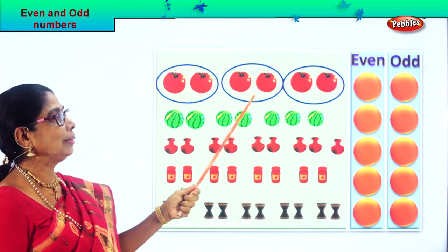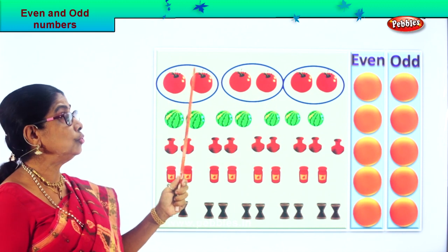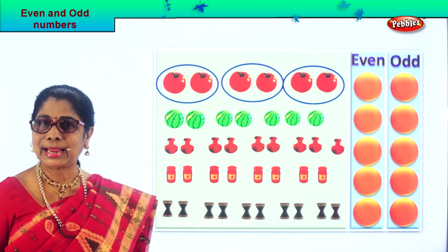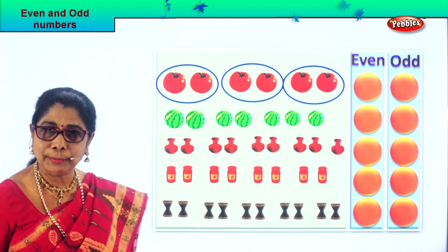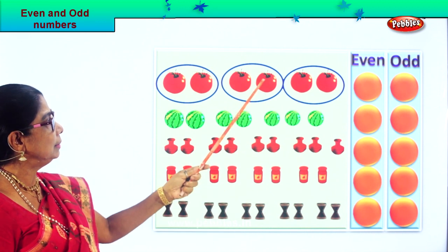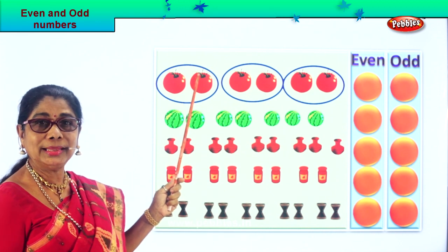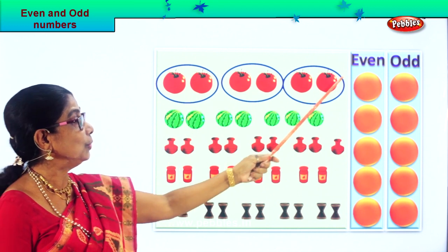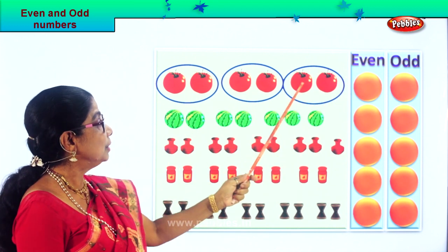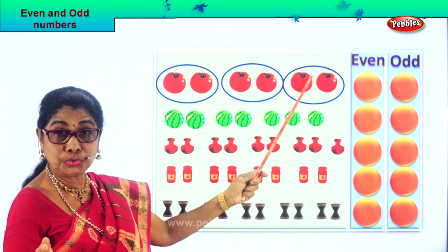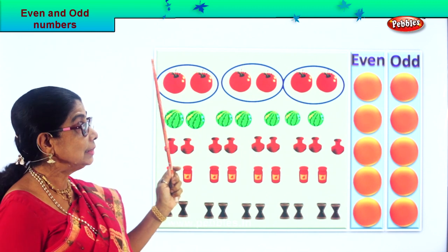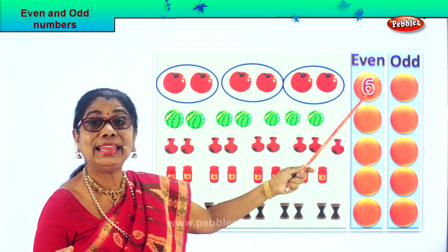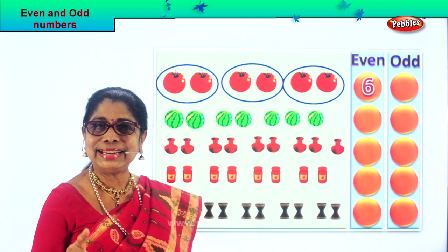We are counting in twos: two, two, two, two. There is no single one left. Is it an odd number or even number? Everybody's got partners — we call this even. Count in twos: two, four, six. So we write the number six here.